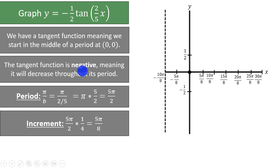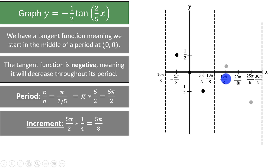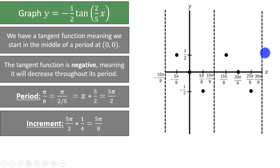Since we have a negative tangent function, we will decrease throughout the period, meaning we will be coming down from positive infinity. At negative 5pi over 8, we would typically be at the point 1, but since we have 1 half multiplying the function, we will instead be at 1 half. We already have the point (0, 0), and then at 5pi over 8 we will be at negative 1 half. At 10pi over 8, we will have another asymptote. Then the function repeats: at 15pi over 8 we are at 1 half, at 20pi over 8 we have 0, at 25pi over 8 we are at negative 1 half, and at 30pi over 8 we have another asymptote.